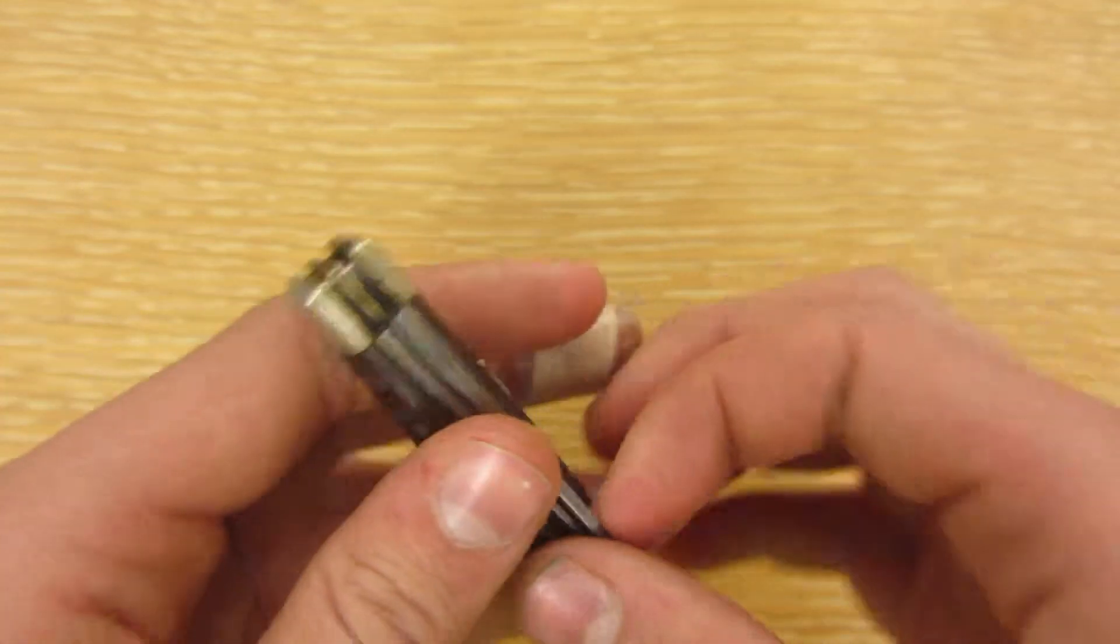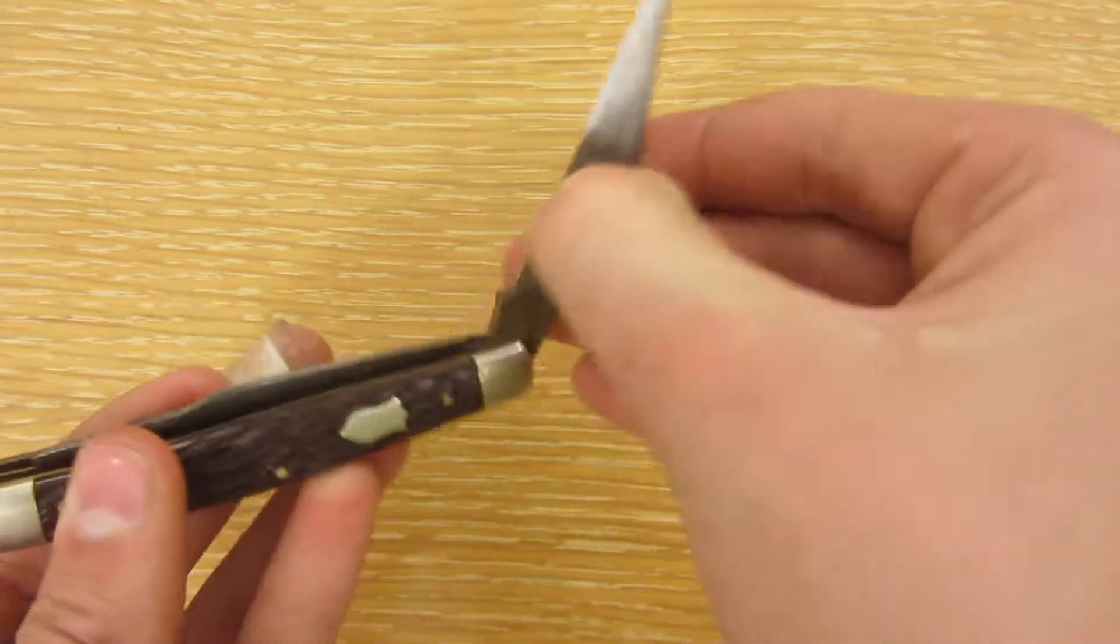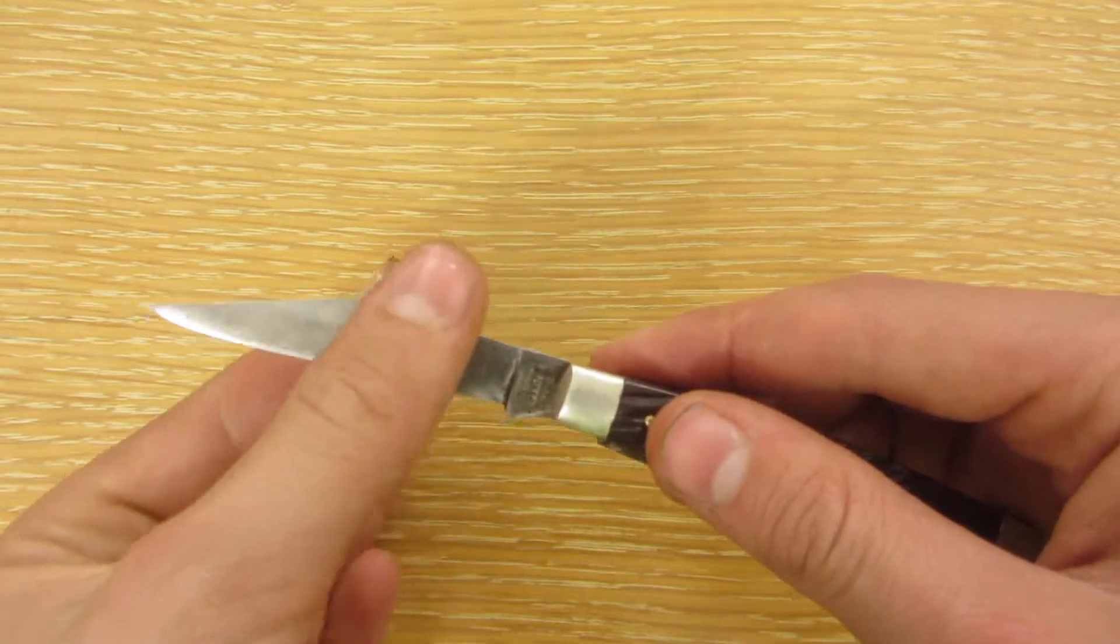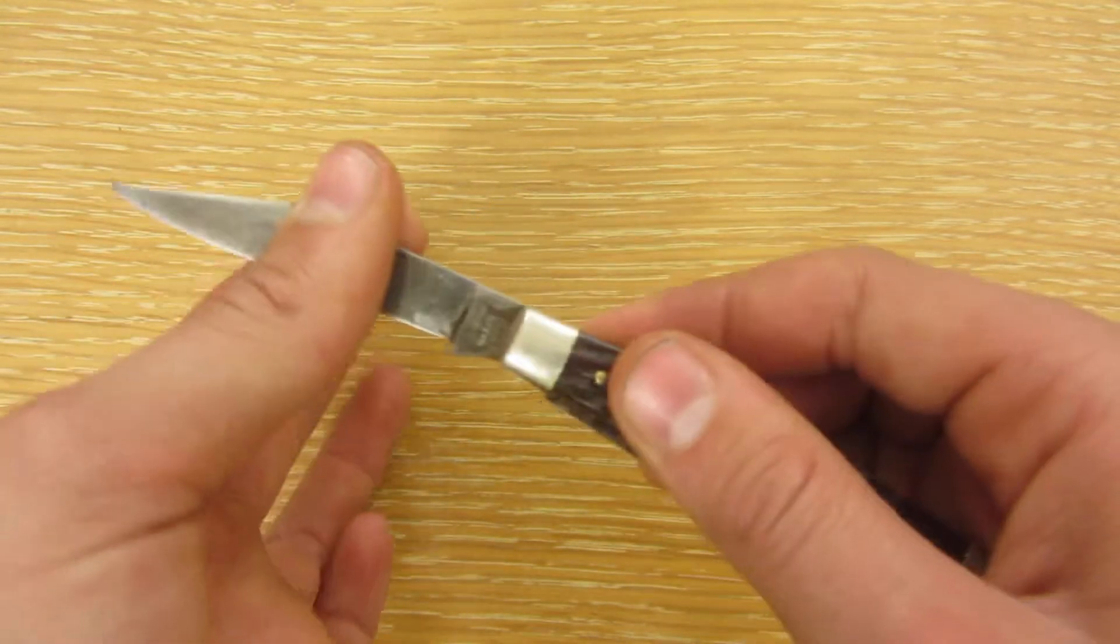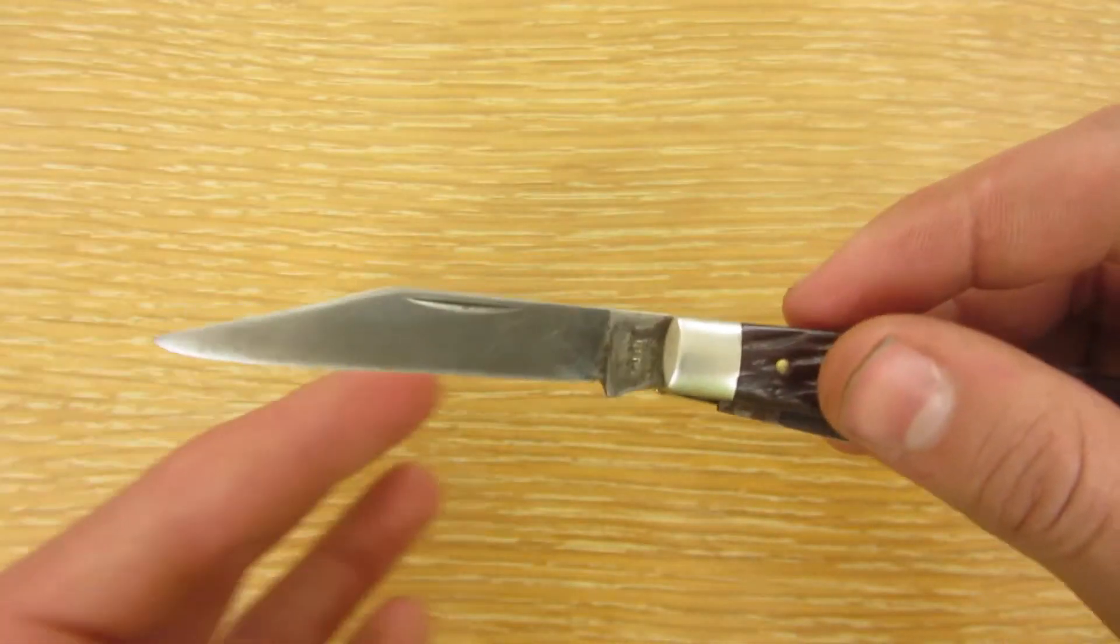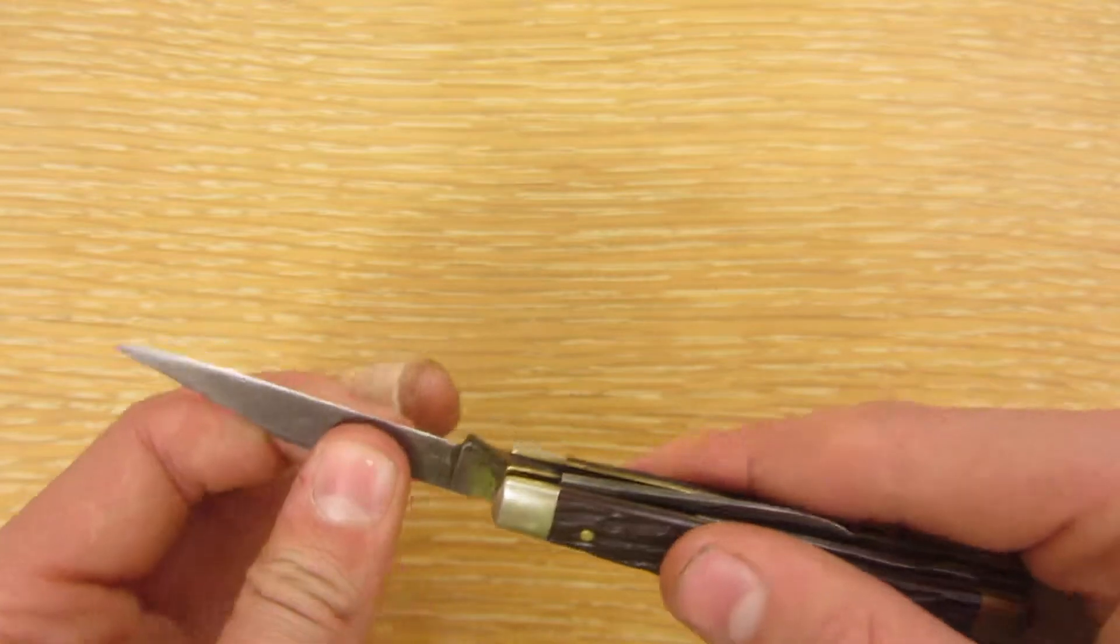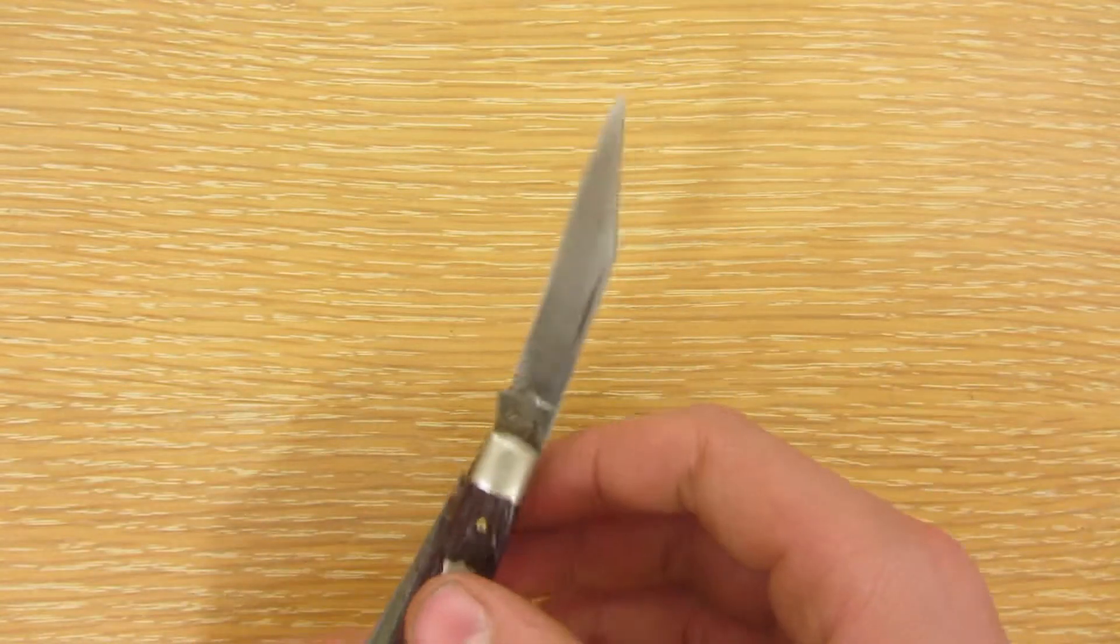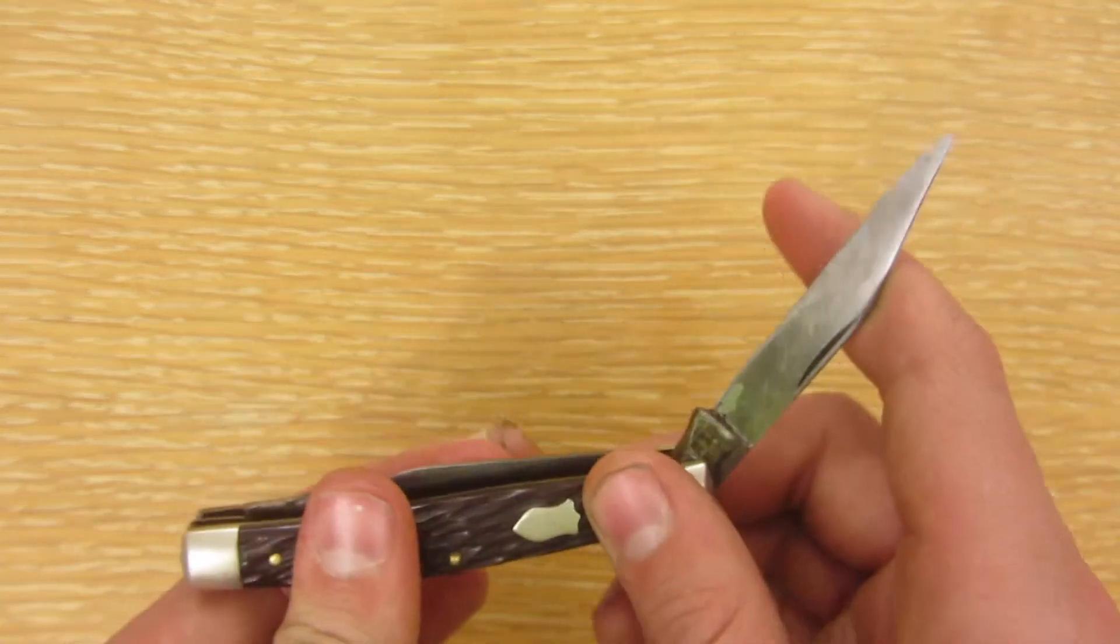And then it's got this blade, it's just slip joint. This one's somewhat weak on mine. It's not too bad, actually. It's about normal, with the blade reasonably sharp. I haven't sharpened it yet, so it would probably get a lot sharper.